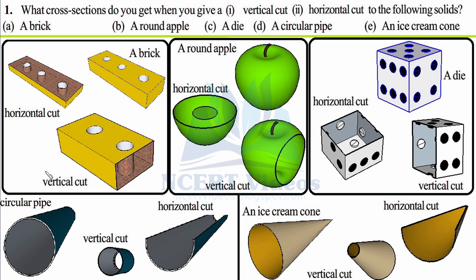Now we will take the same brick and cut it horizontally — that is, we will cut from here all the way around. You will again get a cross section that is a rectangle. Both cuts give rectangles. The only difference is that in the horizontal cut, the area of the cross section will be bigger. Here we have length and depth, whereas vertically we have depth and height.